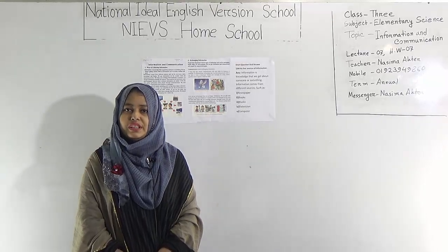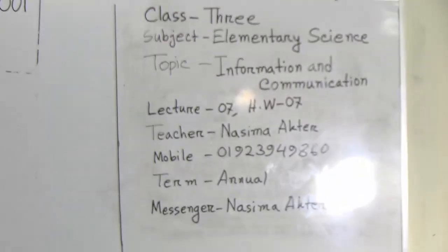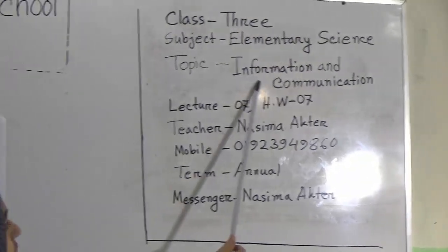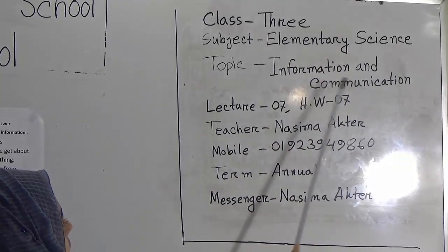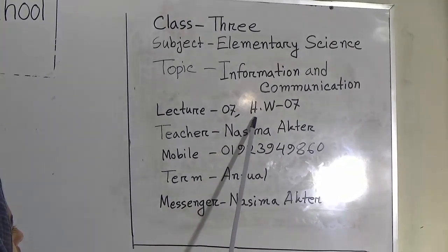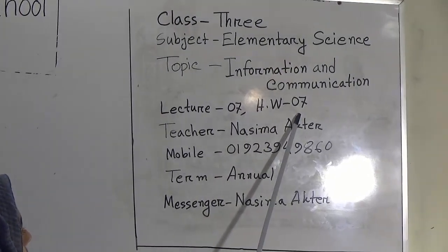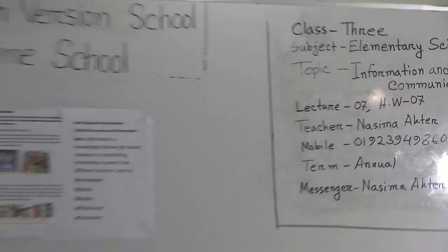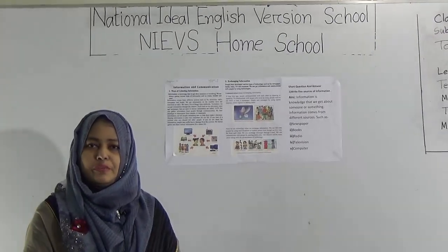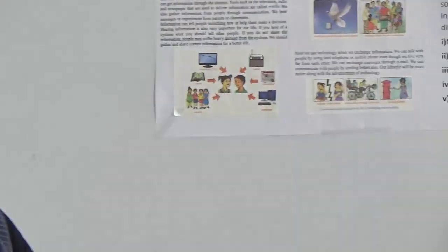Today's topic is Information and Communication. This is lecture number 7 and your SW number will also be 7. Information is knowledge that we get from someone or something. We get information from radio, television, newspaper, friends, people, and family members. Communication means exchanging information.